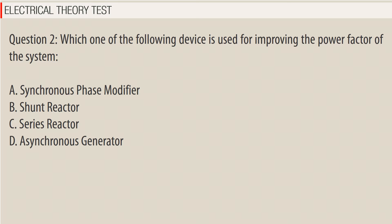Question 2: Which one of the following devices is used for improving the power factor of the system? A. Synchronous phase modifier. B. Shunt reactor. C. Series reactor. D. Asynchronous generator.